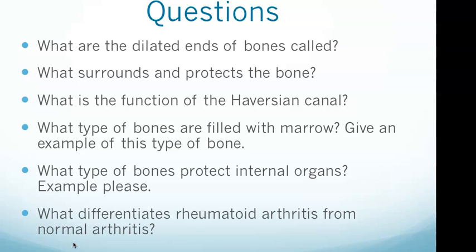The questions to prepare for: What are dilated ends of bones called? What surrounds and protects bone? What is the Haversian canal's function? What types of bones are filled with marrow, and what's an example? What types of bones protect our internal organs and what's an example? And finally, what differentiates rheumatoid from normal arthritis?